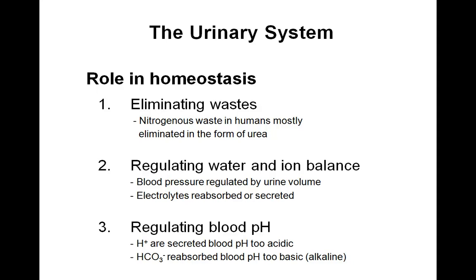Nitrogenous waste in humans is mostly eliminated in the form of urea. Secondly, by regulating water and ion balance. Blood pressure is regulated by urine volume output.